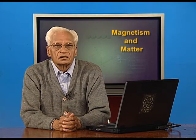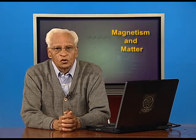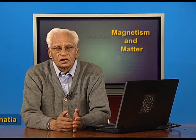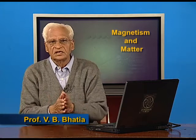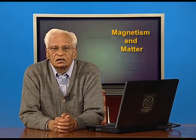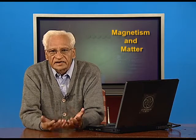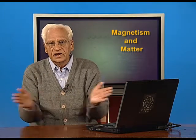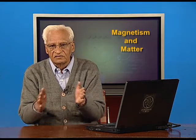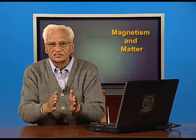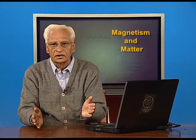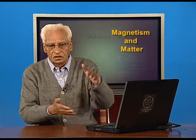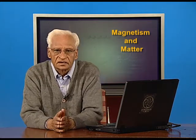In the last lecture, we dealt with the force on a current-carrying conductor placed in the magnetic field. We found that this forms the basis of instruments called galvanometers, which detect current. Galvanometers can be converted into ammeters so that current can be measured — galvanometers only detect, ammeters measure the current. Galvanometers can also be converted into voltmeters, which measure the voltages or the source voltage in the circuit.